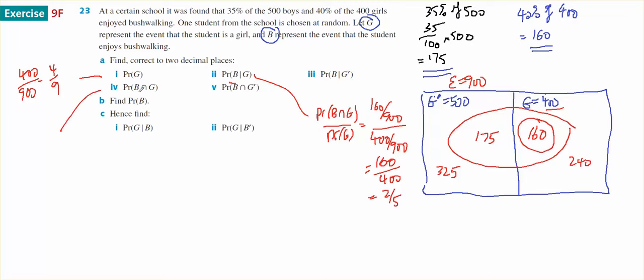Probability of bushwalking intersect girl. Probability of bushwalking intersect girl is this here, because that's a bushwalker and a girl. So the probability of bushwalking intersect girl will be 160 over 900, which is 8 45ths.